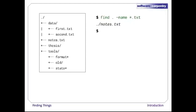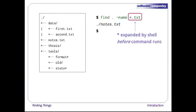Let's try matching by name with 'find . -name *.txt'. We expect it to find all the text files, but it only prints out ./notes.txt. The shell expands wildcard characters like star before commands run. Since *.txt in the current directory expands to notes.txt, the command we actually ran was 'find . -name notes.txt'. Find did what we asked — we just asked for the wrong thing.